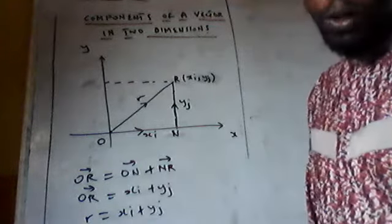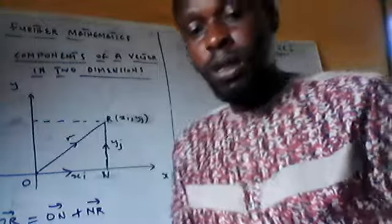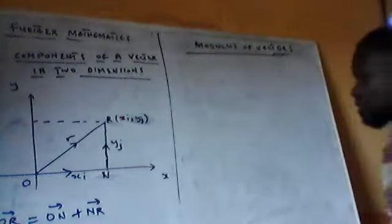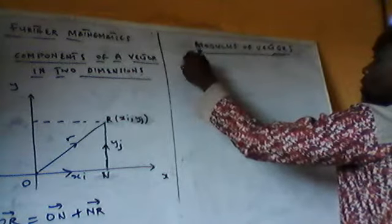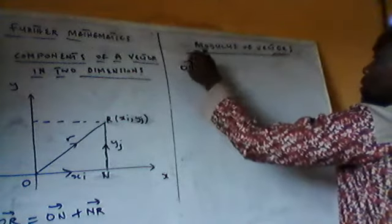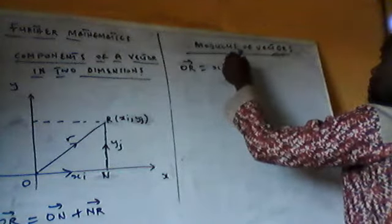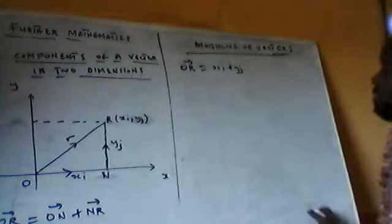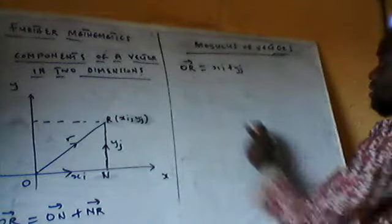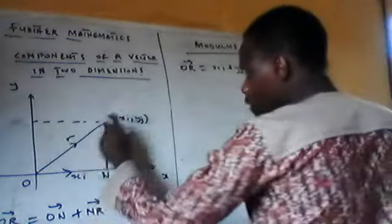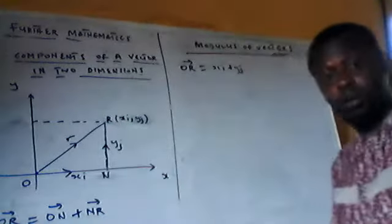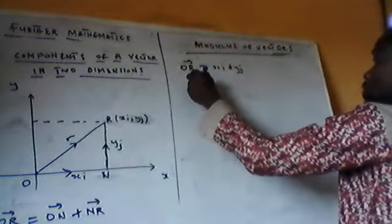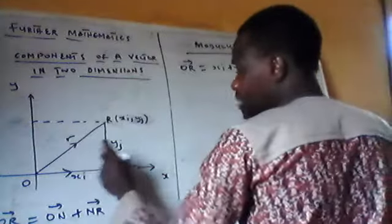Let's do an example for you to understand. Now let's move to the modulus of a vector. We are saying our vector OR is equal to XI plus YJ. To find the modulus of OR — the magnitude of OR — we apply the Pythagorean theorem.